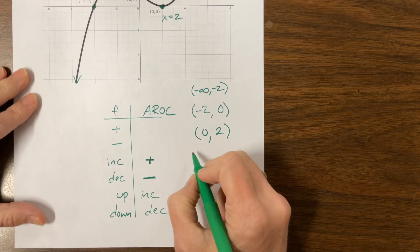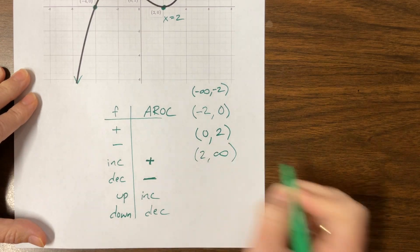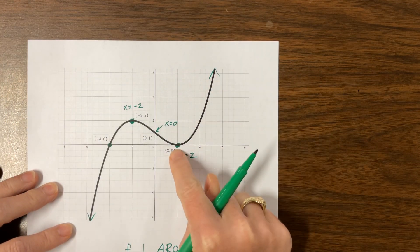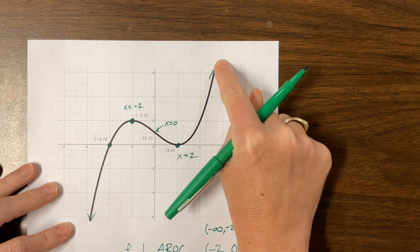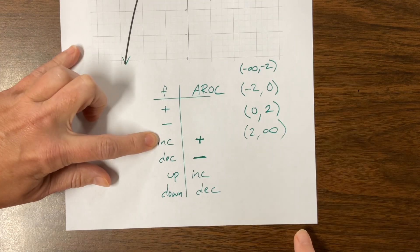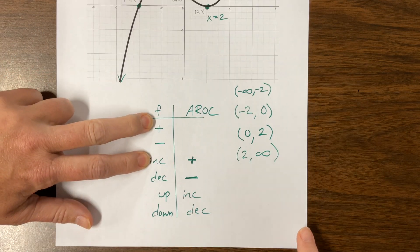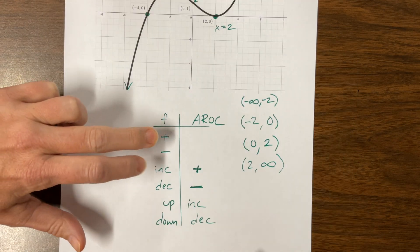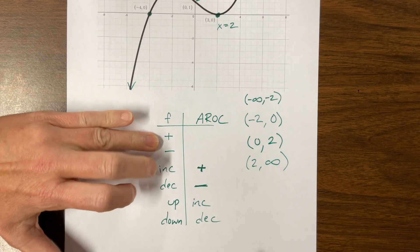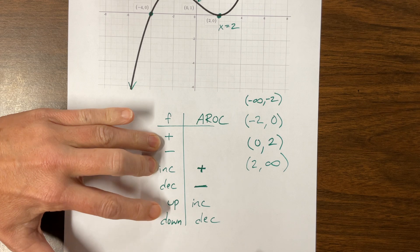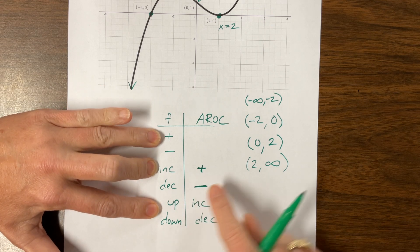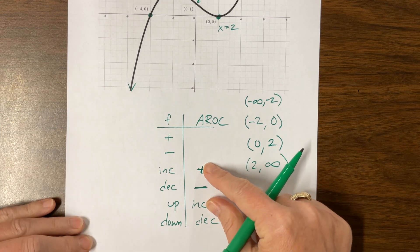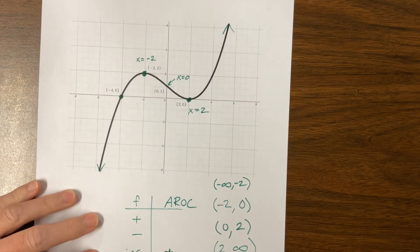The last piece from two to infinity: our graph is increasing, it's positive on that whole interval, and it's concave up. So that tells us the average rate of change is positive and increasing. See that relationship?